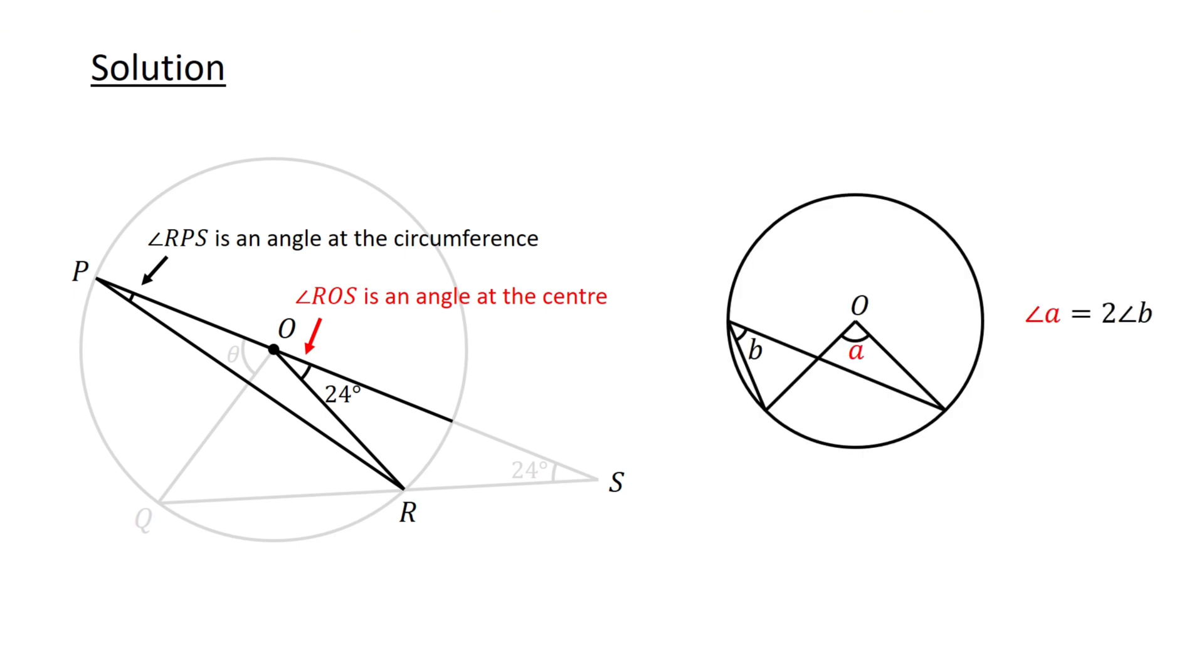Recall that an angle at the center is equal to twice the angle at the circumference. Thus, 2 times angle RPS equals angle ROS, which equals 24 degrees. Therefore, angle RPS equals 12 degrees.